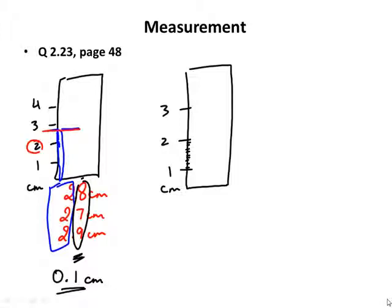If you go to the next ruler, which is calibrated not just every one centimeter but also for every tenth of a centimeter, and you look at the paperclip again — this ruler is marked one, two, three, four, five, six, seven, eight, nine — we are trying to read this level right here.